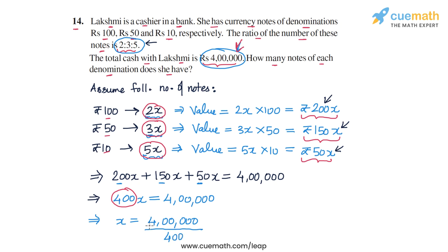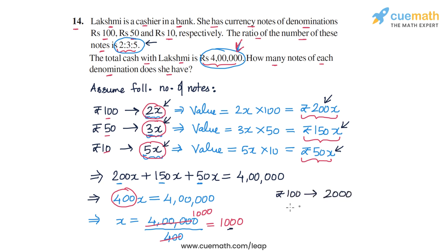4 lakh divided by 400 equals 1000, so the value of x is 1000. Using this value of x, we can find the number of notes of each kind. The number of rupees 100 notes is 2x = 2 × 1000 = 2000. The number of rupees 50 notes is 3x = 3000. And the number of rupees 10 notes is 5x = 5000.